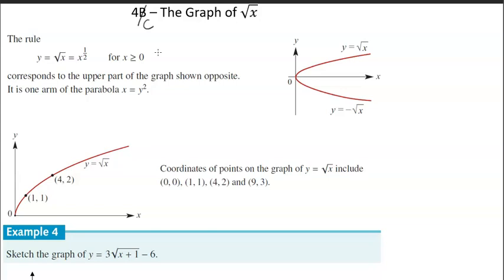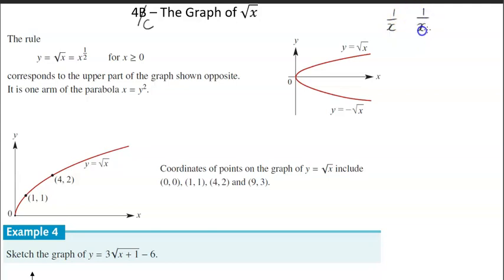Now, in the previous classes — exercises 4a and 4b and also from the previous topics — we've been looking at different graph properties. We started off with linear, then moved on to quadratic. The previous two exercises, we looked into the rectangular hyperbola and also the truncus. That was 1 over x, which is also written as x to the negative 1, or 1 over x squared, which is x to the negative 2.